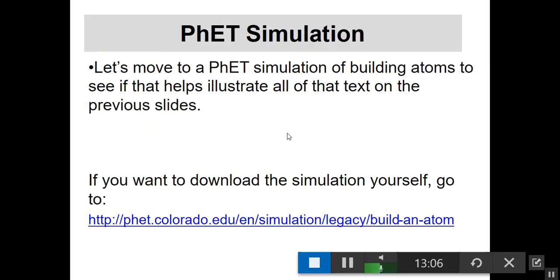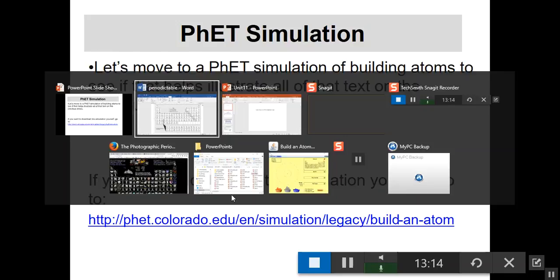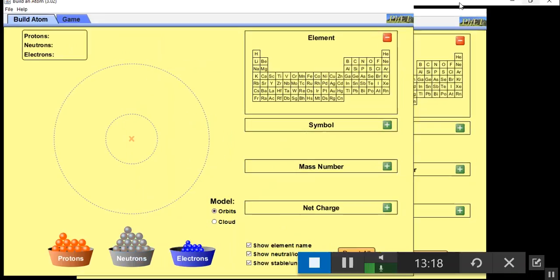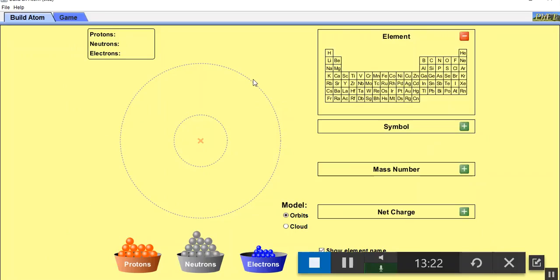Let's look at a simulation called Build an Atom. You have buckets of protons, neutrons, and electrons at the bottom. I can start throwing protons into the nucleus. When I throw one proton in, I've got hydrogen. If I throw in two, now I've got helium. If I add another one, now I'm up to three, that's lithium. I'm going up by atomic number. Each proton I add changes which element I've got.